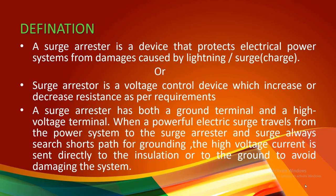A surge arrester is an electrical device that protects electrical power systems like transformers and generators from damages caused by lightning or surges. Surge means charge. So whenever there is lightning or any high voltage coming in, the surge arrester protects all these devices.